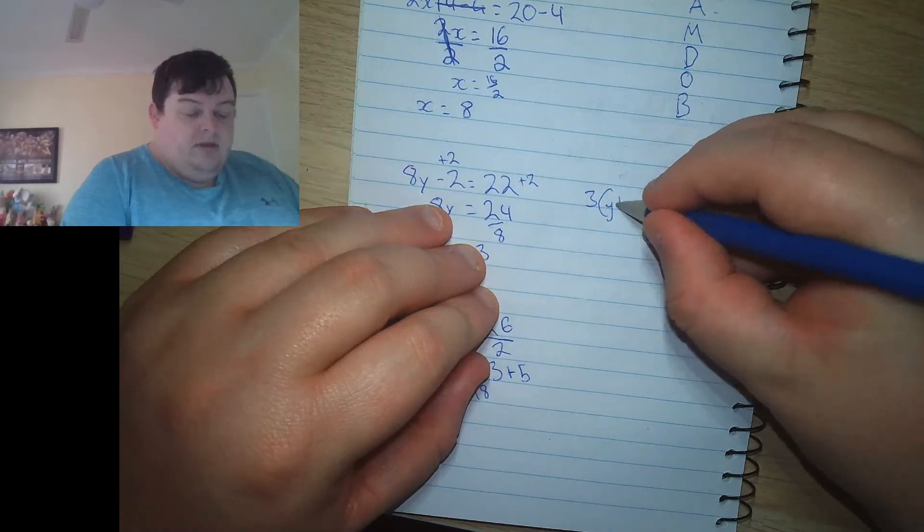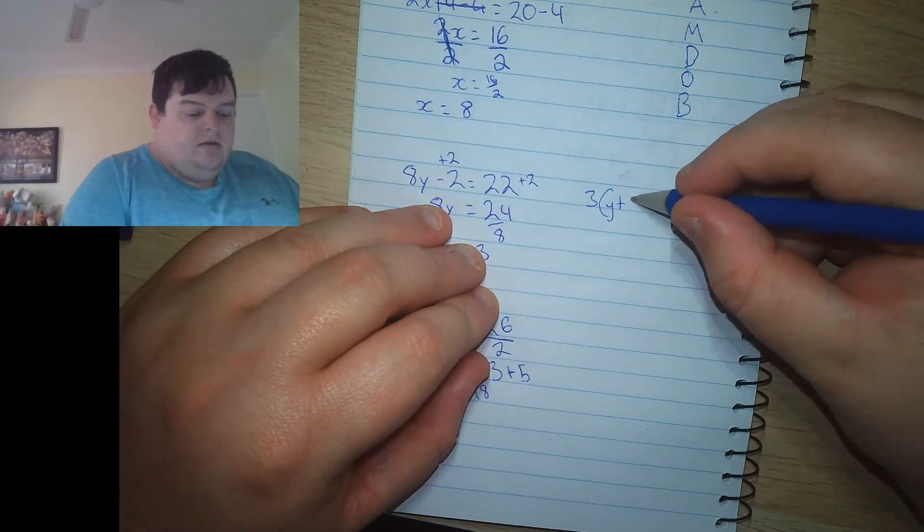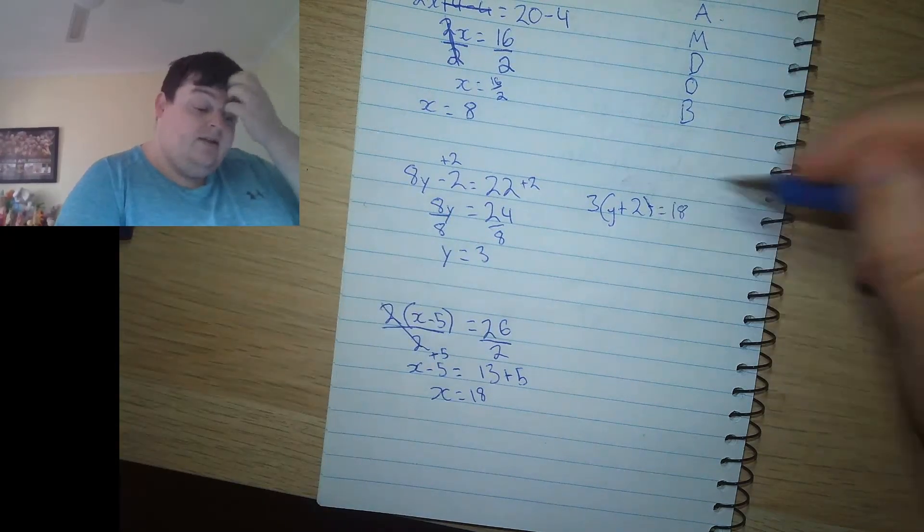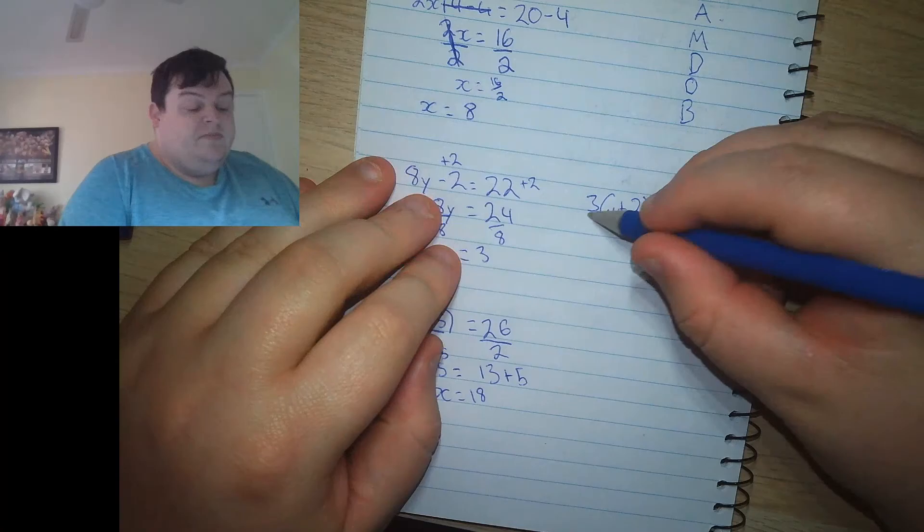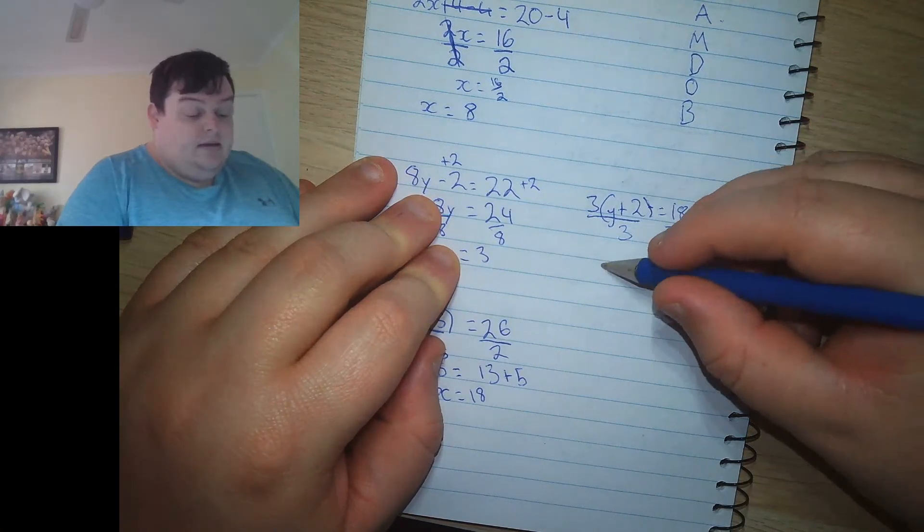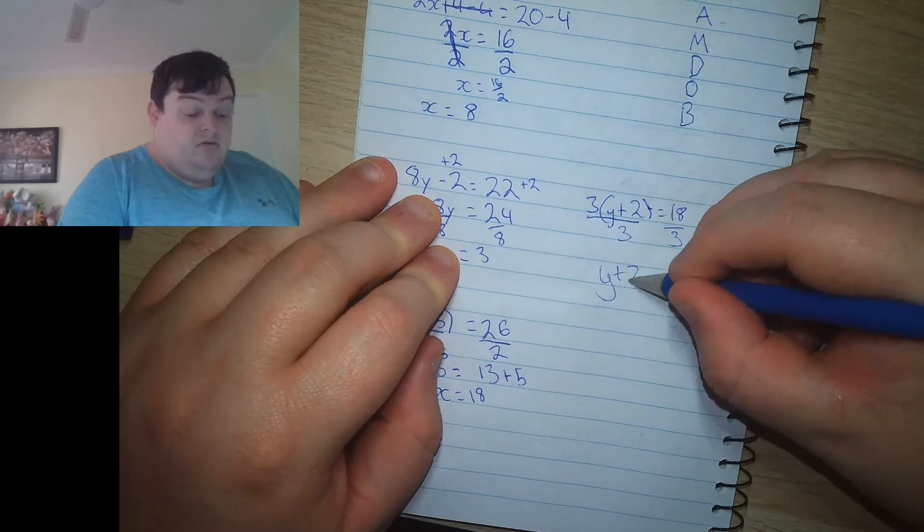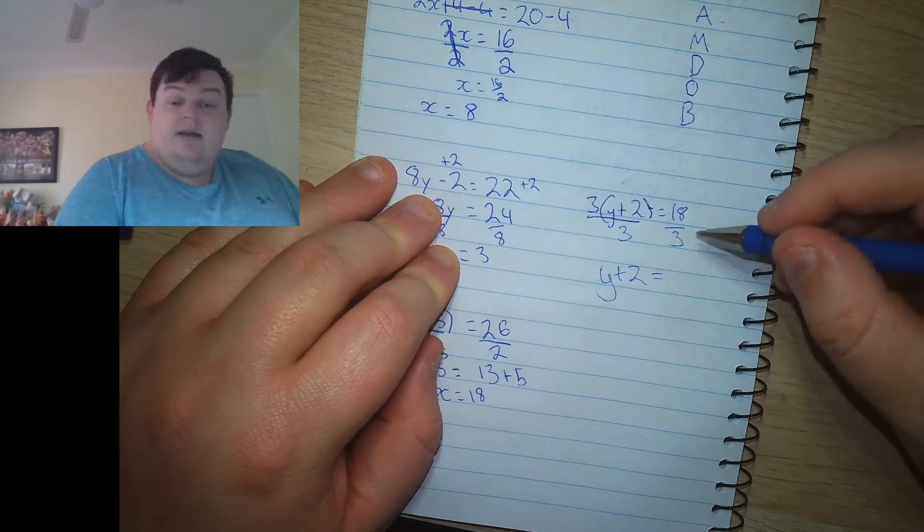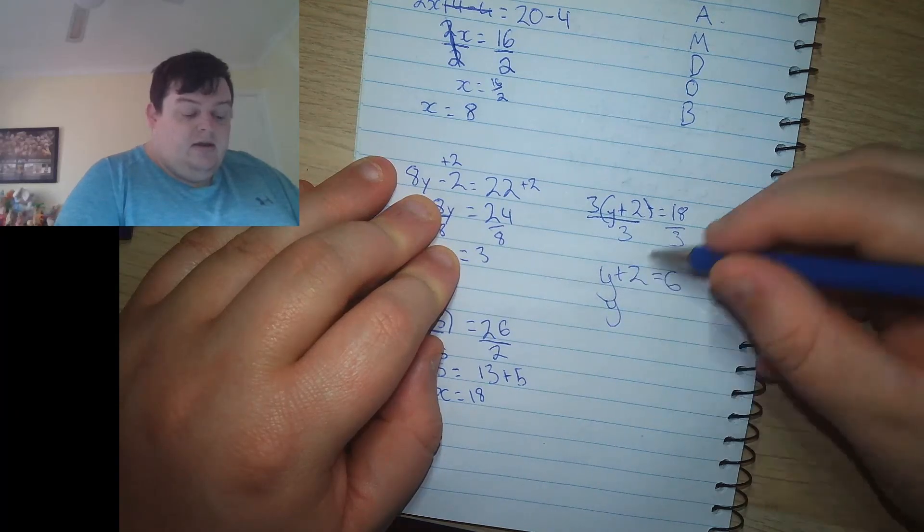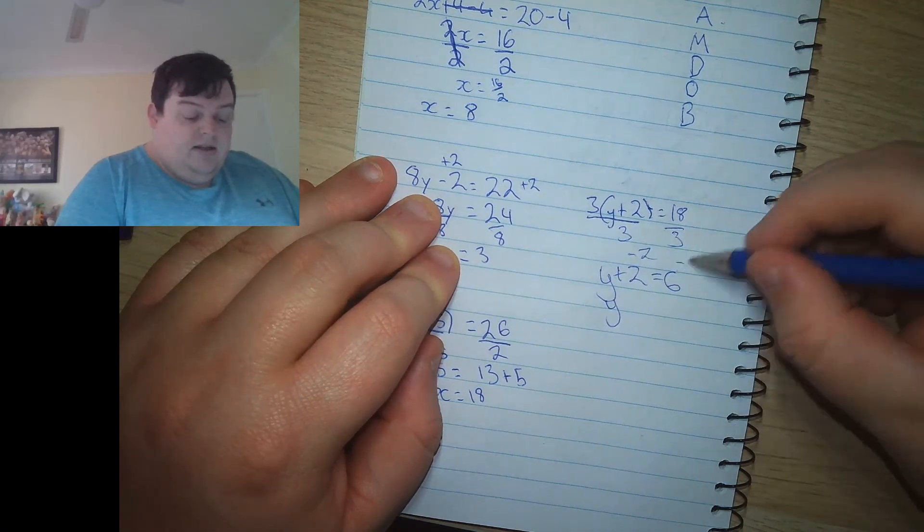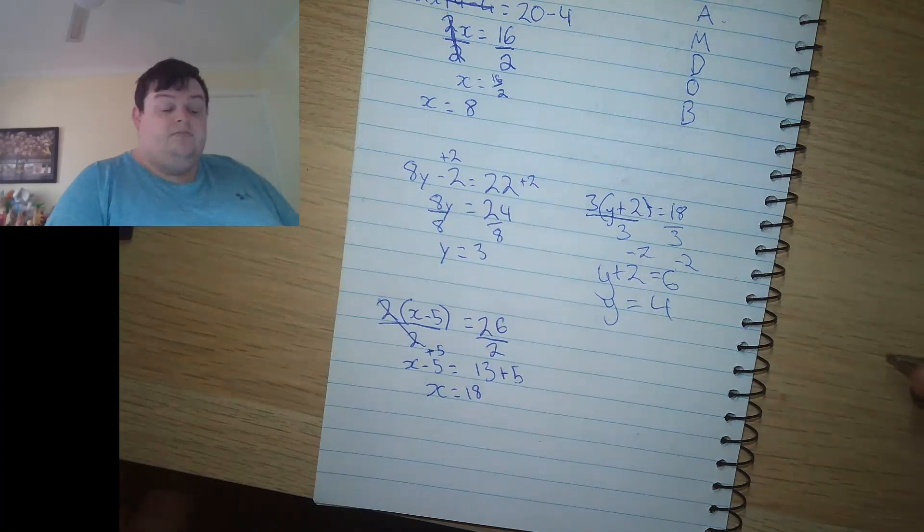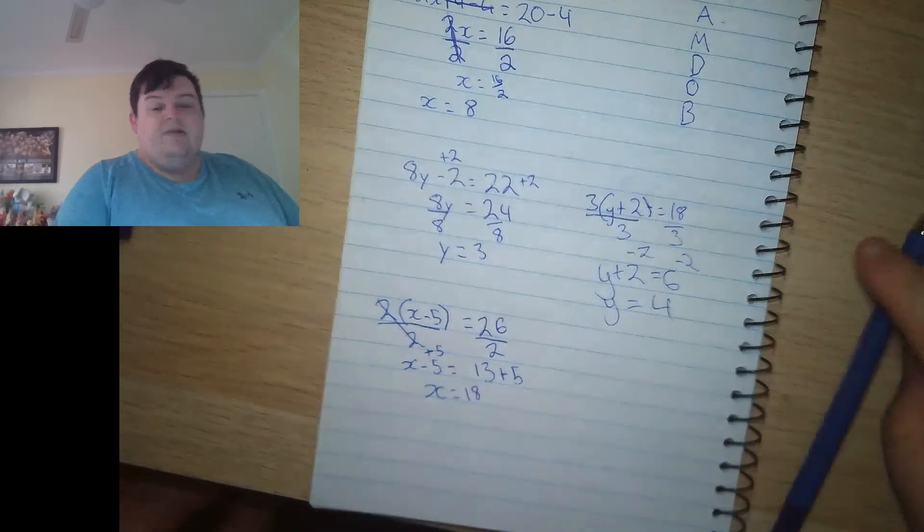3y plus 2 equals 18. Again, they're in brackets, so we do it last. Divide both sides by 3 to cancel that out. Gives you y plus 2. 18 divided by 3 is 6. If I want to undo y plus 2, I subtract 2 from both sides and they should get y equals 4. Now that's basically how this works.